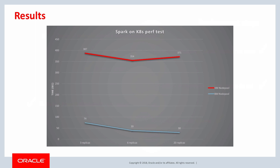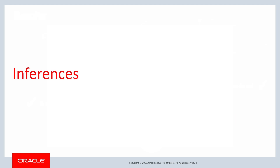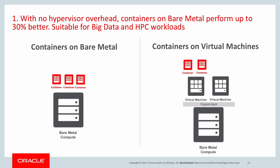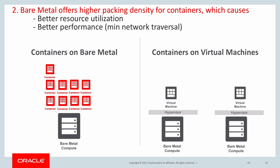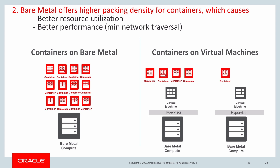The vCPU and memory allocation per pod for both the VM standard 1.4 shape node pool and the BM standard 2.52 node pool are identical. Let's find out why we see such vast performance differences when running Spark jobs on bare metal Kubernetes clusters. With no hypervisor overhead, containers on bare metal perform up to 30% better. Additionally, the packing density of containers on bare metal instances is very high compared to virtual machines, causing better resource utilization and performance gains with minimal network traversals for inter-container communication.